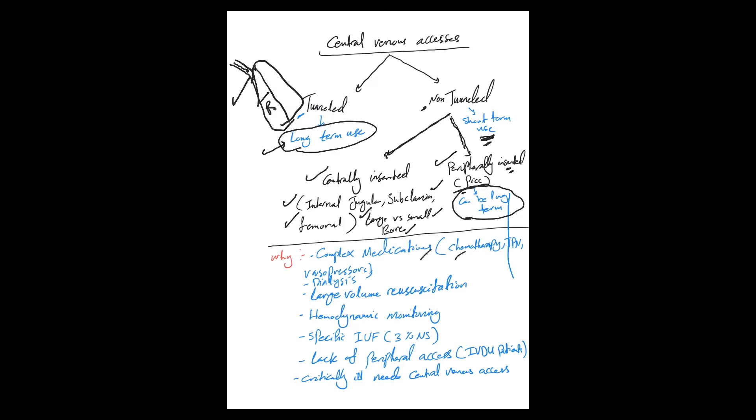Total parenteral nutrition, vasopressors - things we use in critically ill patients a lot. Dialysis patients who need dialysis urgently or emergently, temporary dialysis catheters which belong to non-tunneled. Permanent dialysis catheters belong to tunneled, and that's different from fistulas.